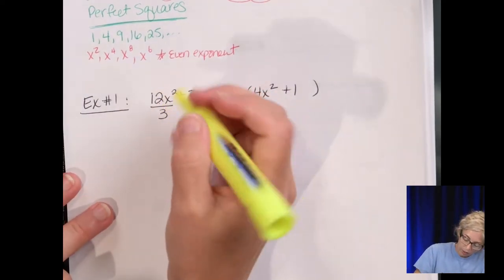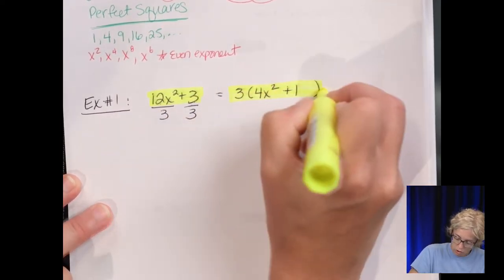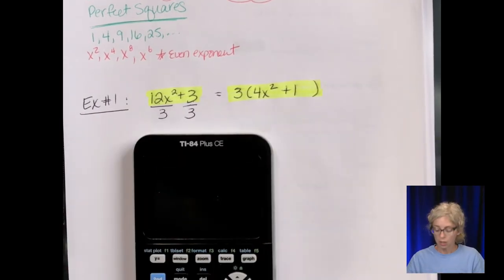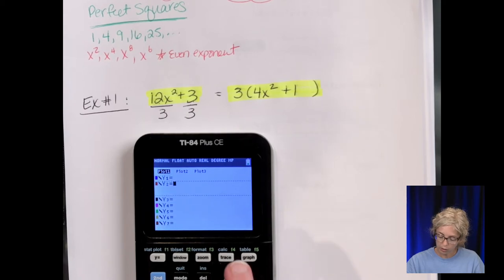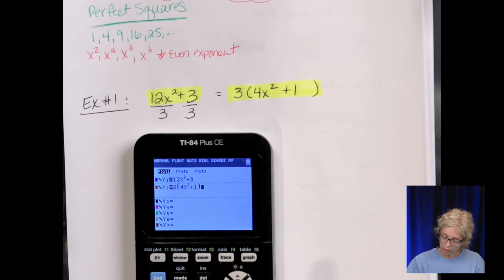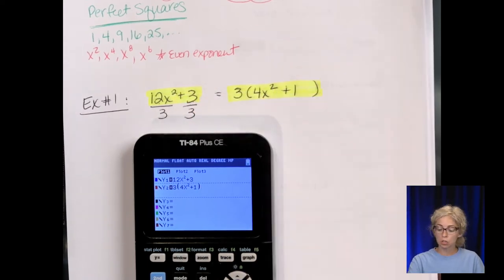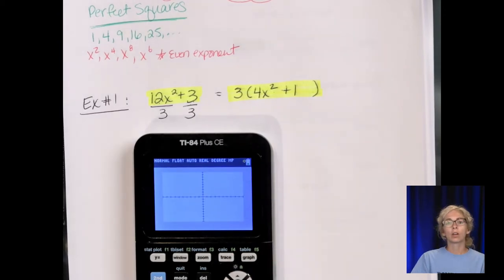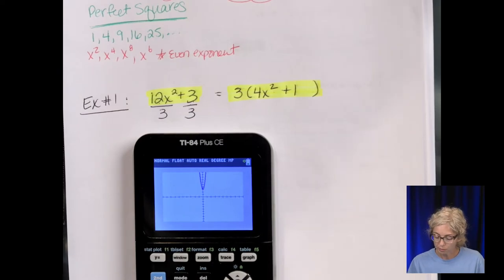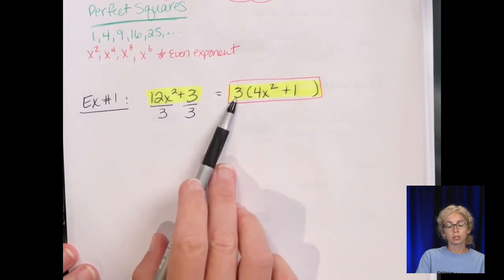Let's check using a graphing calculator: type the original expression 12x² + 3 into y1, and the factored form 3(4x² + 1) into y2. Since these are degree 2, we should see a U-shaped curve. If the red graph goes over the blue, we're all set — and there we go. These factors are correct. The GCF here was just a number.